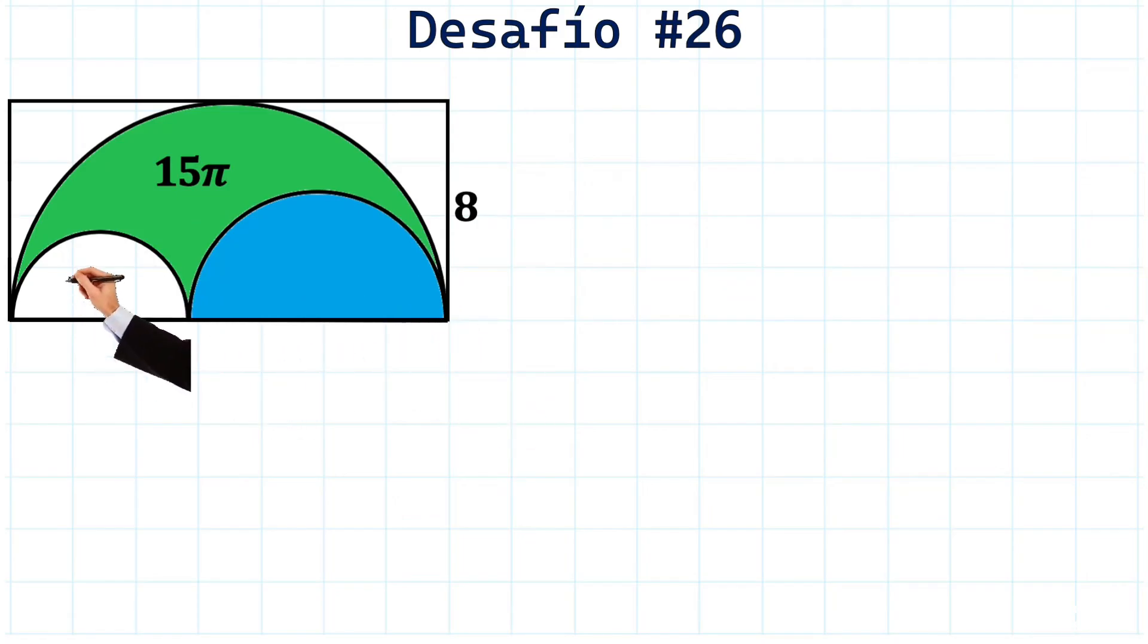First, we have a rectangle and three semicircles. And notice that this green part, the area of the green part is 15π.